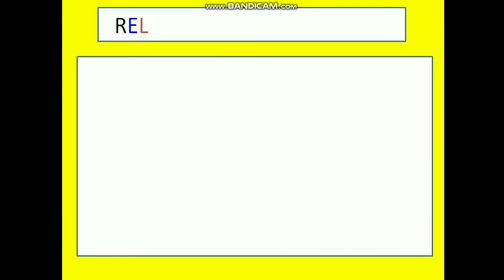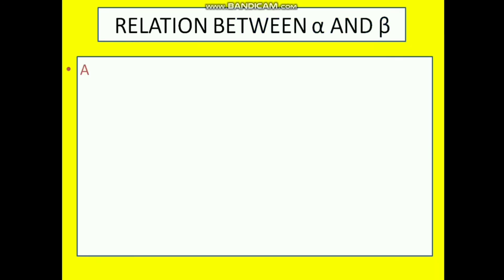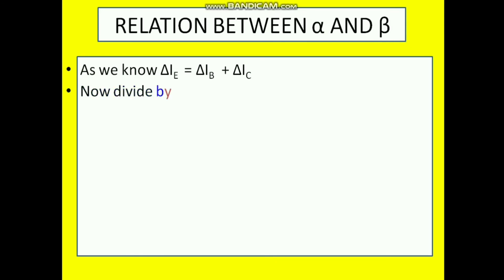Now let's look at the relation between alpha and beta. Alpha is the amplification factor of the common base transistor and beta is the amplification factor of the common emitter transistor. We know the input current del IE is equal to del IB plus del IC. Dividing this equation by del IC, I get: del IE upon del IC equals del IB upon del IC plus del IC upon del IC.